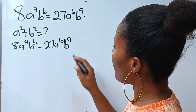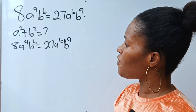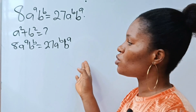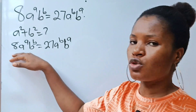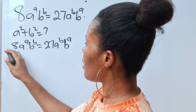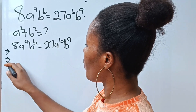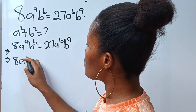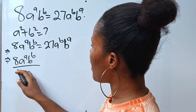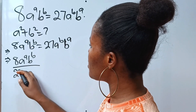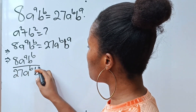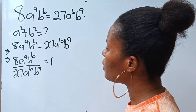Now, first of all, let's make this side equal to 1. To do that, we are going to divide both sides, so we have 8a to the power of a times b to the power of b, divided by 27a to the power of b times b to the power of a, is equal to 1.